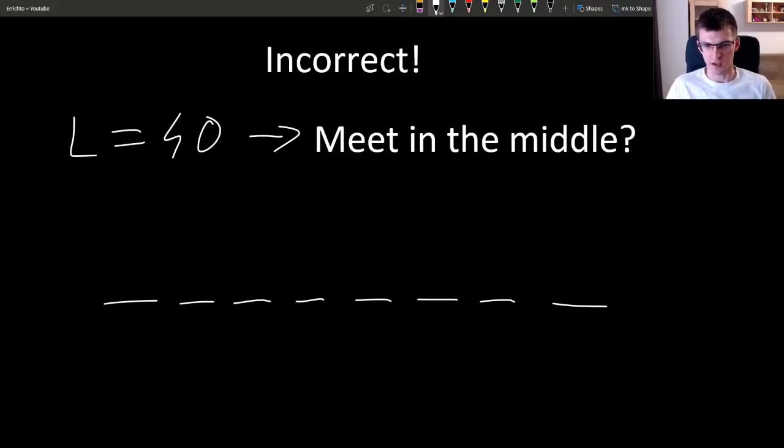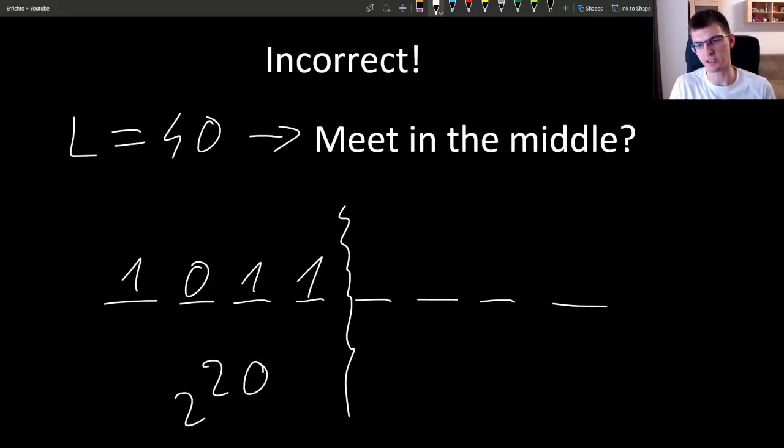For 40, it looks quite natural and reasonable to split the number into 2, for each half that is of length 20, try each of 2 to 20 possibilities, so there are this many possibilities for a binary number, for each of them compute the remainder.